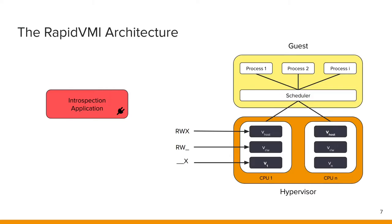Finally, there is the executable view for each processor core. In this view, the modified pages are marked as execute-only and are remapped to a duplicate shadow page which contains the actual modification. We use this view as a default for all monitored processes and processor cores.